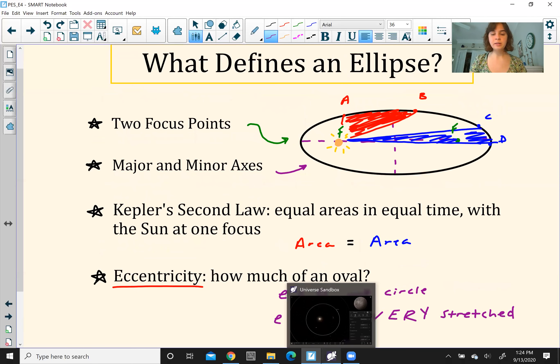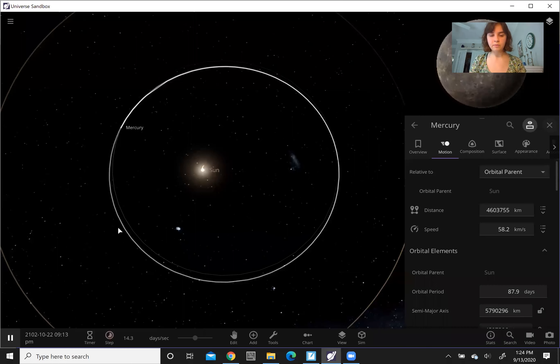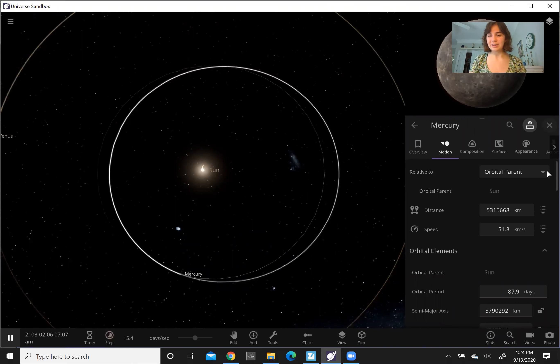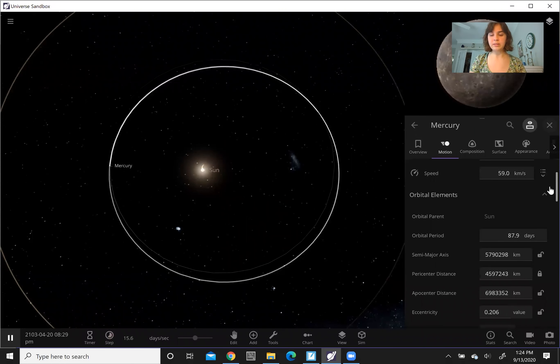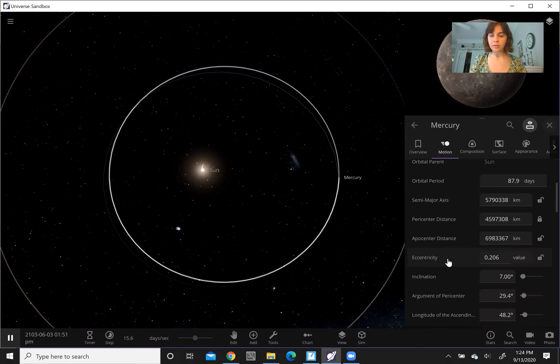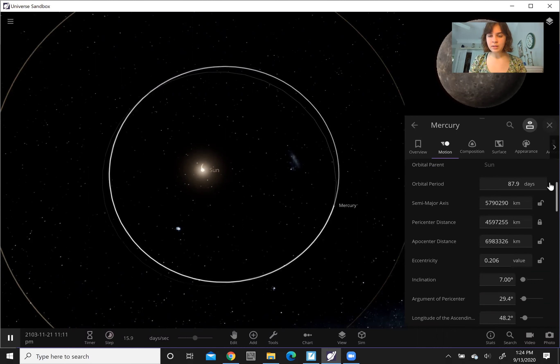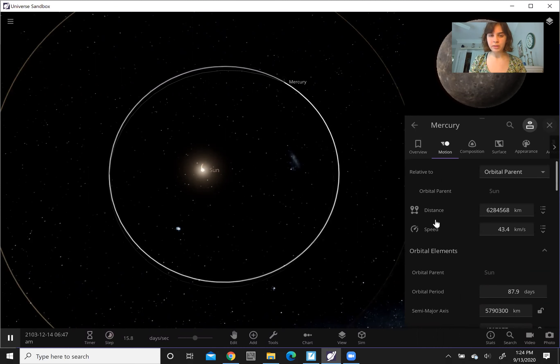Now I want us to look at an example here. We have Mercury. This application doesn't run very well on my computer. So if it's laggy, I am sorry. There are two different things I want us to look at. We have an e value right here, and that's going to be 0.2. So kind of an ellipse, closer to a circle. And then the next thing I want us to pay attention to is the speed.